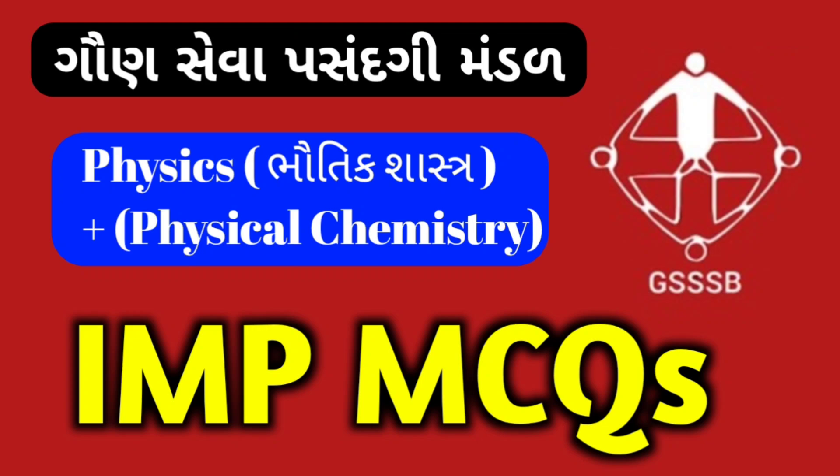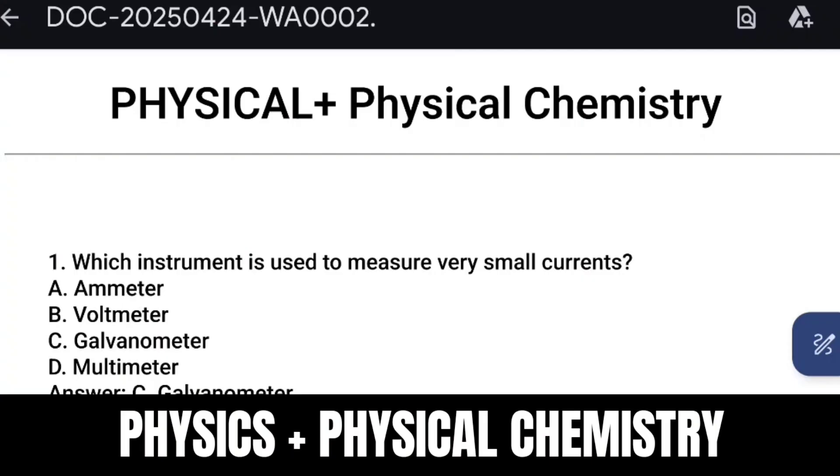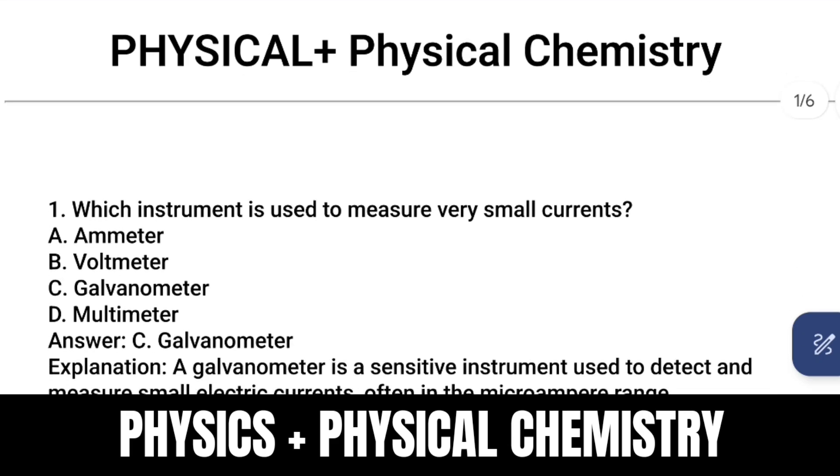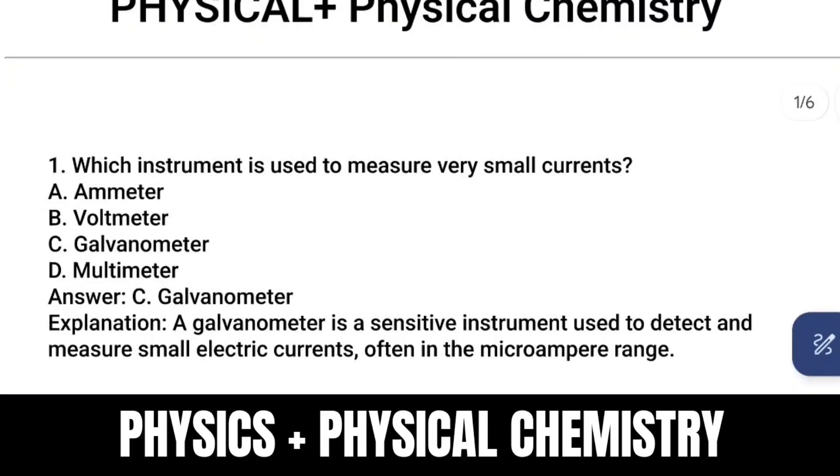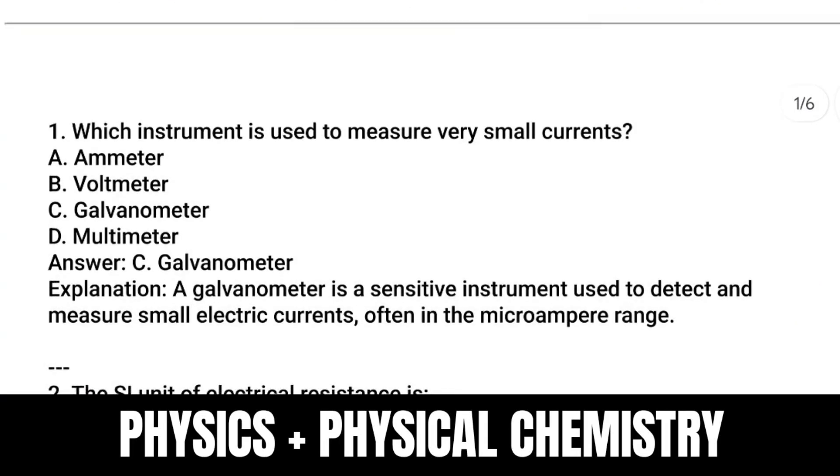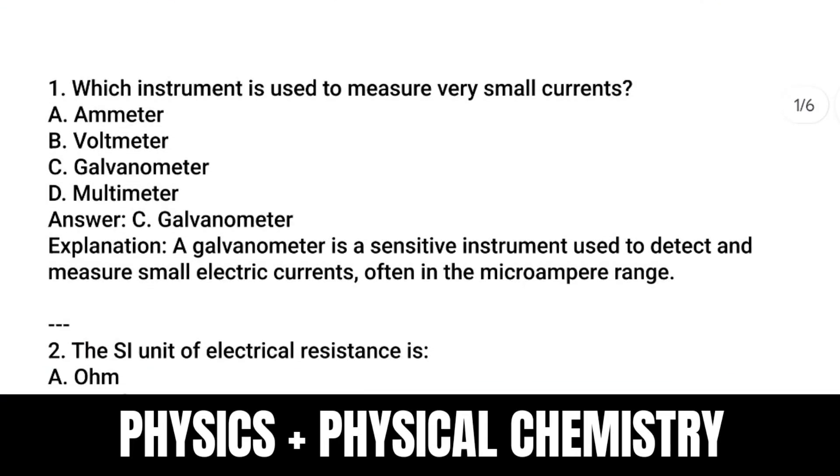Physical chemistry and physics important MCQs. First question: Which instrument is used to measure very small current? Answer is galvanometer. A galvanometer is a sensitive instrument used to detect and measure small electric currents, often in the microampere range.